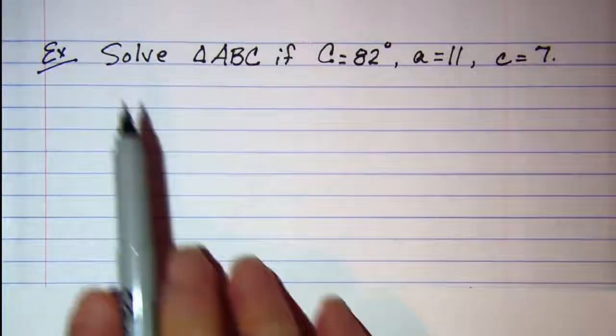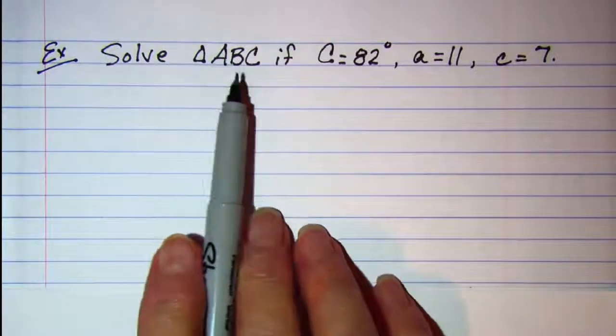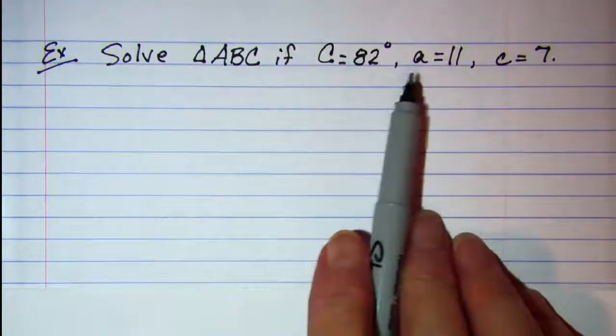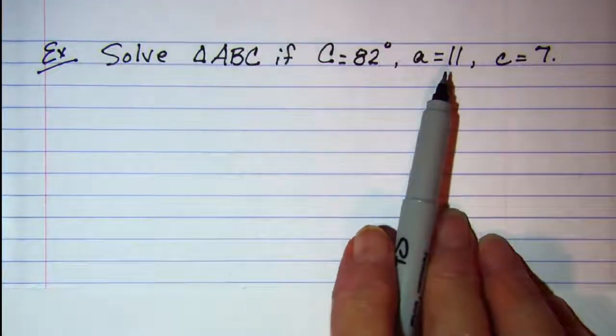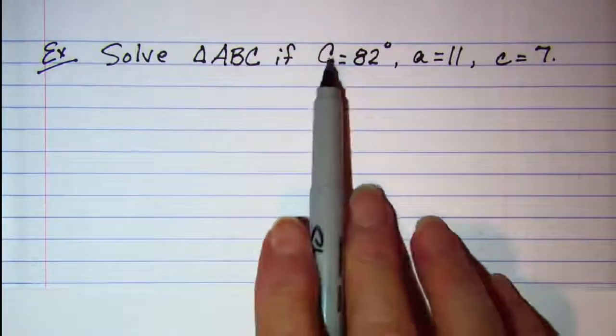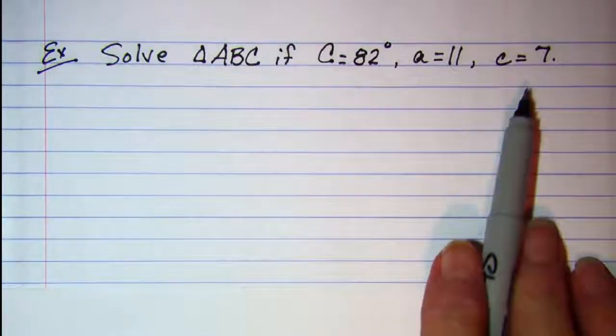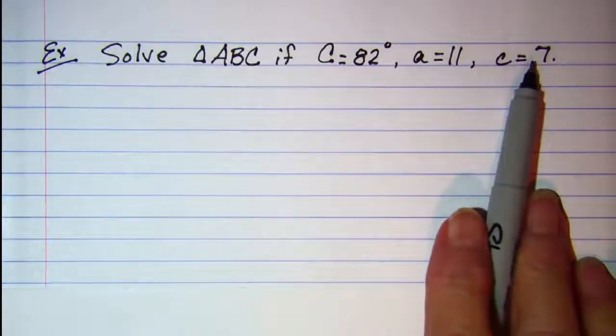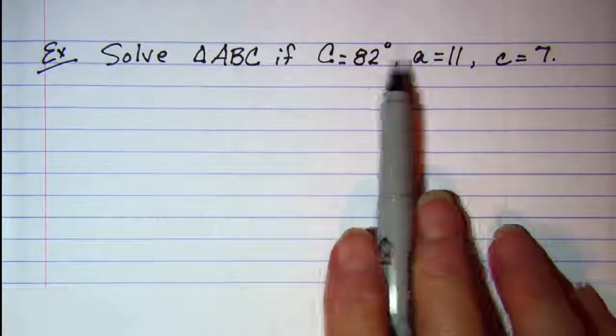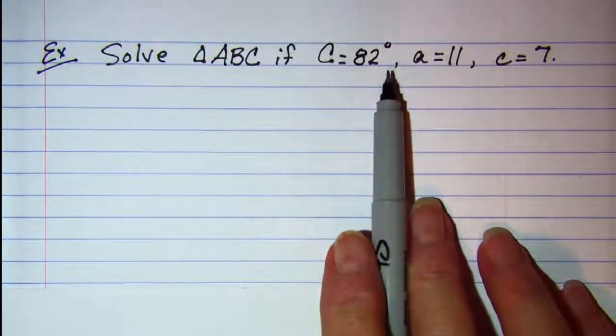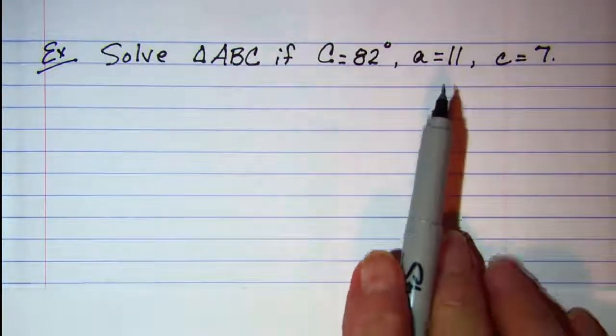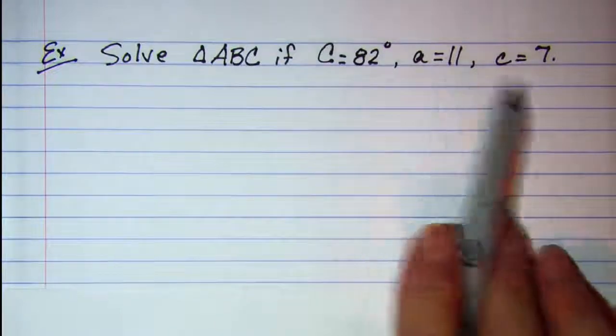Alright, in our first example, we're asked to solve triangle ABC if angle C is 82 degrees, A is 11, and C is 7. Now, you'll notice that angle C and side C are given along with another side. So, this is the case where we may possibly have no triangles, one triangle, or two triangles, because I have an angle side side.